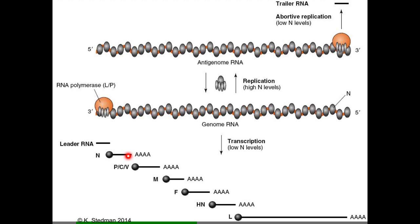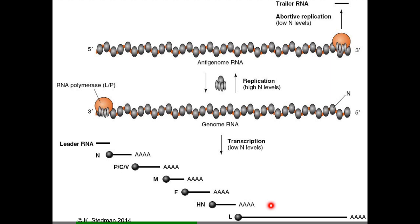You end up with more of the N protein because the polymerase occasionally falls off — the polymerase stays associated with the RNA, only associating at the 3-prime end. Once you end up with enough N protein, it will associate with the RNA-dependent RNA polymerase and signal to stop the stuttering. It's time to replicate the whole genome — first make an antigenome, which is the positive strand for the whole genome, then that's a template for negative strand genomes. The negative strand genome gets packaged with matrix protein, fusion protein, hemagglutinin, and neuraminidase, giving you more virions.